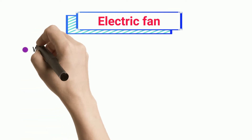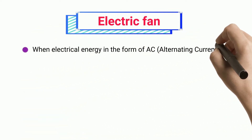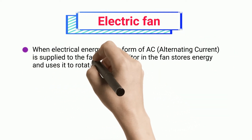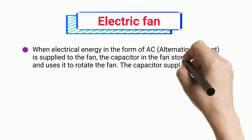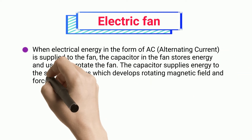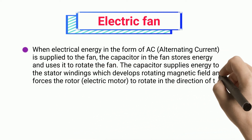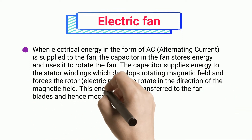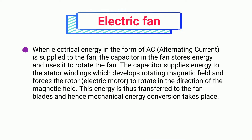Electric Fan. When electrical energy in the form of AC alternating current is supplied to the fan, the capacitor in the fan stores energy and uses it to rotate the fan. The capacitor supplies energy to the stator windings which develops a rotating magnetic field and forces the rotor, the electric motor, to rotate in the direction of the magnetic field. This energy is transferred to the fan blades and mechanical energy conversion takes place.